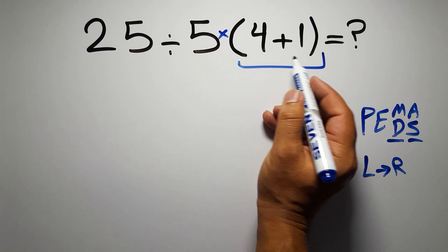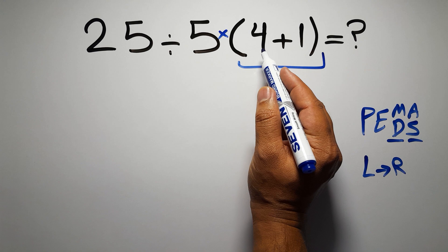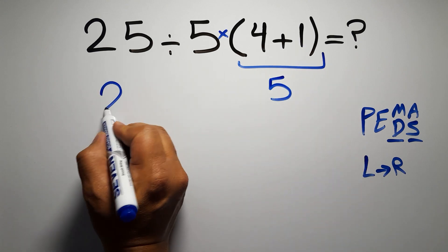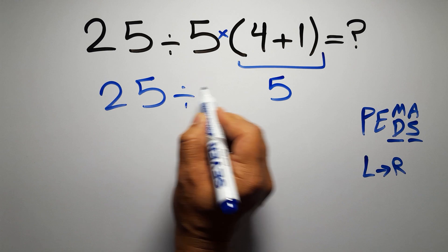So first this parentheses. Inside this parentheses we have 4 plus 1, which equals 5, so 25 divided by 5 then times 5.